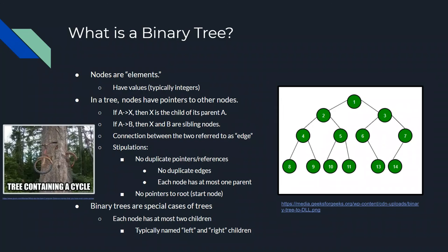Another thing with trees is that there are no pointers to the root, which means the root is the one node in the tree that is not the child of any node. For example, in this tree, the root is 1. Why? Because it's the only node in the tree that is not the child of any node — there's no pointer from some node to node 1. You'll also see that it's the root because all of the other nodes are connected to it. You can reach every other node from the root.